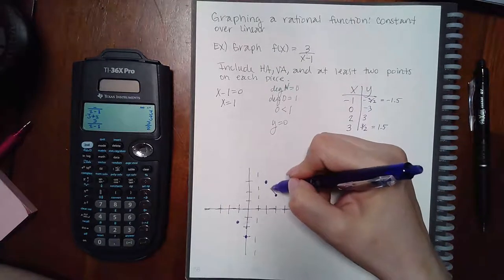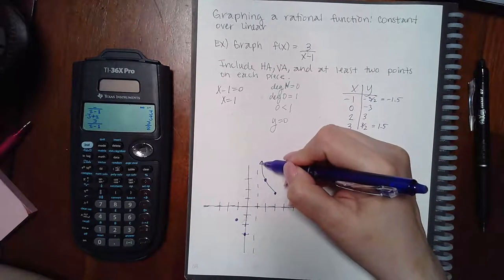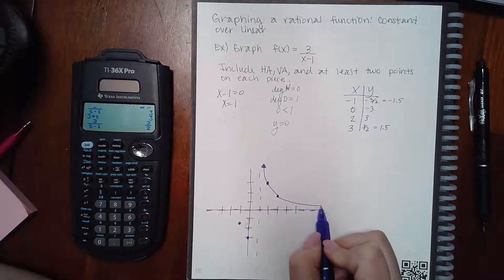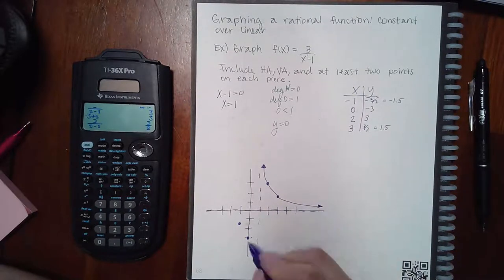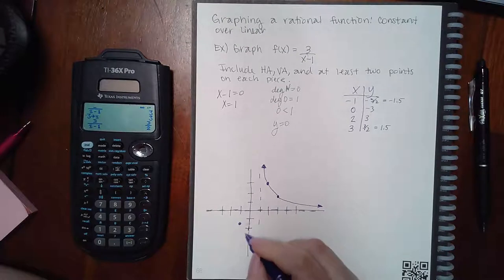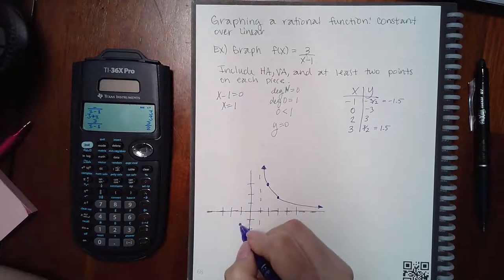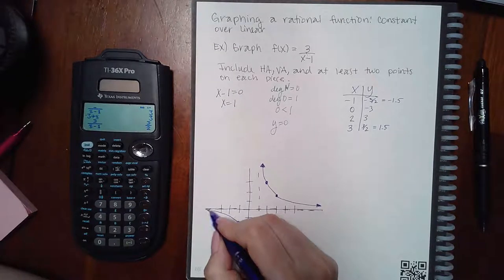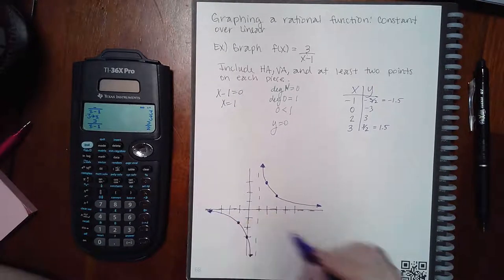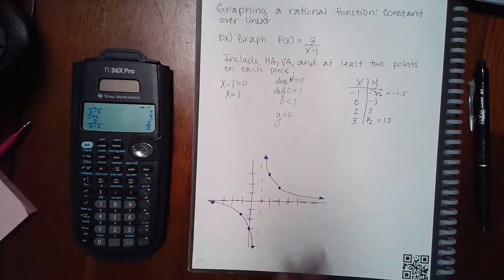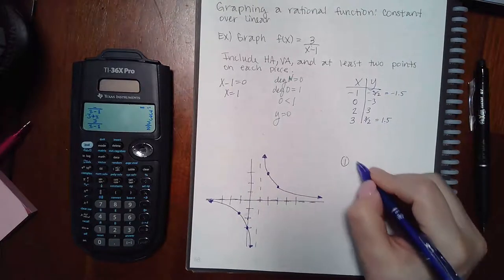Remember, you cannot cross the vertical asymptote, so on the right side the curve has no choice but to go upward and trail off to the right. On the left side it goes downward and trails off to the right along the horizontal asymptote. That's the graph. For graphing software, just graph the asymptotes first.